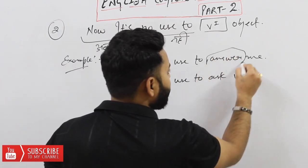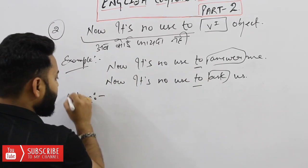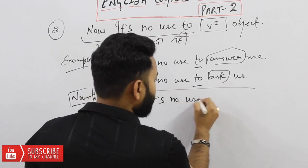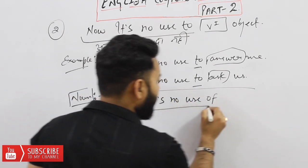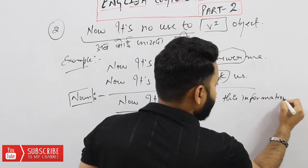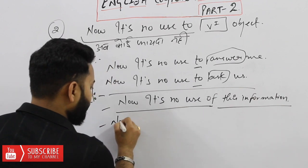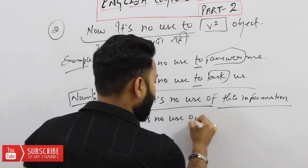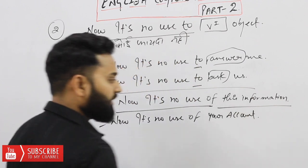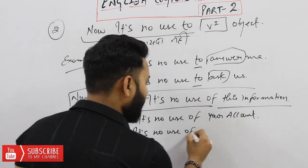इसमें भी अगर आप verb की बात कर रहे हैं तो 'to' का use करना है। अगर noun आएगा, जैसे हमने last logical में किया था, same इसमें भी करेंगे — 'Now it's no use of.' Like: 'Now it's no use of this information' — अब इस information का कोई फाइदा नहीं। Another example: 'Now it's no use of your account' — अब तुम्हारे account का कोई फाइदा नहीं। 'Now it's no use of money' — अब पैसे का कोई फाइदा नहीं।